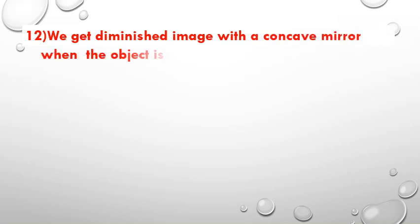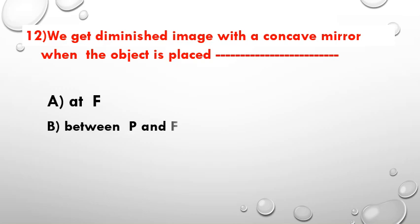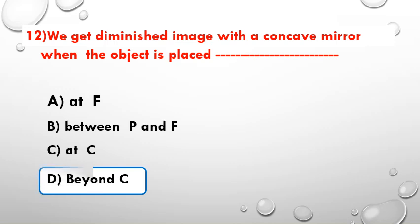We get a diminished image with a concave mirror when the object is placed — option A: at F, option B: between F and C, option C: at C, option D: behind C. The answer is behind C. Observe the picture.